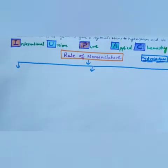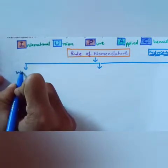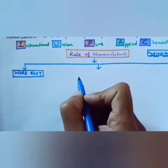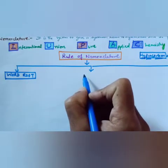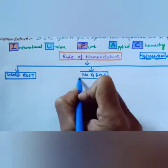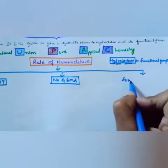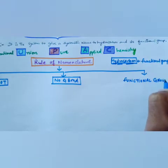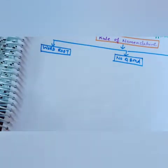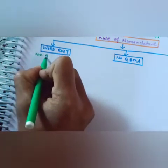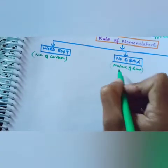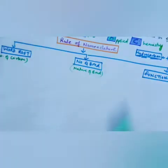Now, what is a hydrocarbon? The first thing we need to see is the word root. Word root means the number of carbons. The second important thing is the nature of the bond — single, double, or triple. The third important thing is the functional group, also called derivatives. Functional group derivatives are attached to the hydrocarbon.